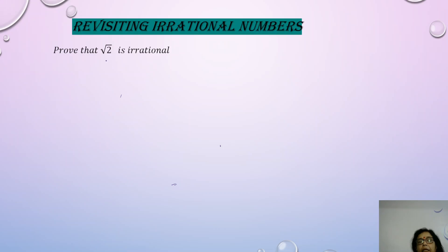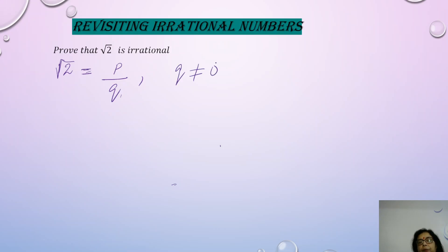Now what is this method? Here we assume that √2 is rational — that means we negate the statement. We say that if it is not irrational, let us take it as rational. So we can write √2 as P/Q, where P and Q are co-prime integers and Q ≠ 0. Now we square both sides, so 2 = P²/Q², which gives us 2Q² = P². This is equation number 1.